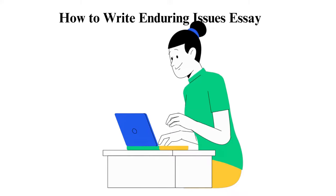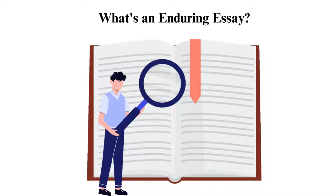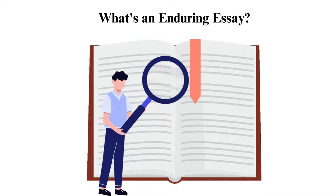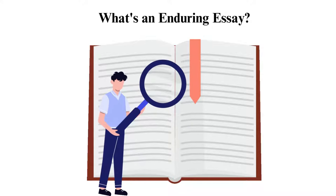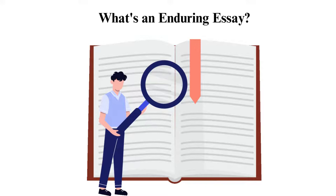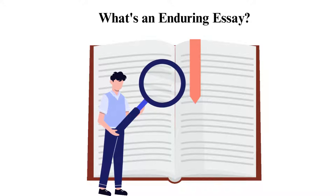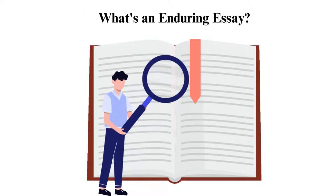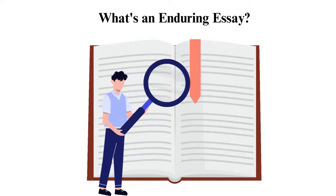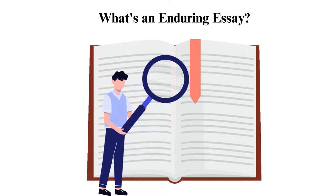How to write an Enduring Issues Essay. What is an Enduring Essay? An essay is a paper that you write on a particular subject and consists of an introduction, body, and conclusion. An Enduring Essay is a report that discusses a particular challenge's effects on society and its perseverance across time. You should explain how people have tried to deal with the issue and their accomplishments over time. If asked to write this kind of essay, you should have an idea of the Enduring Issue you will discuss.